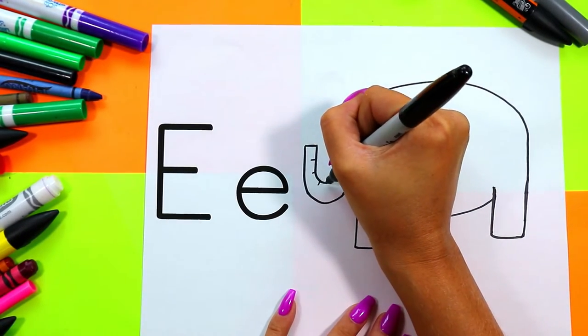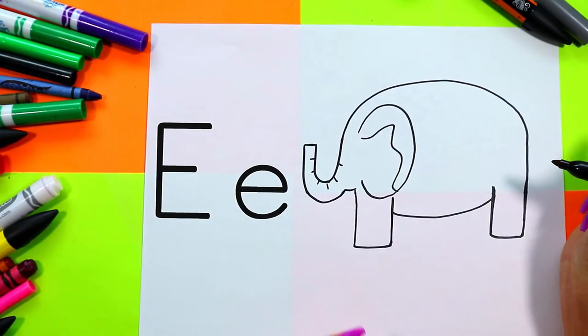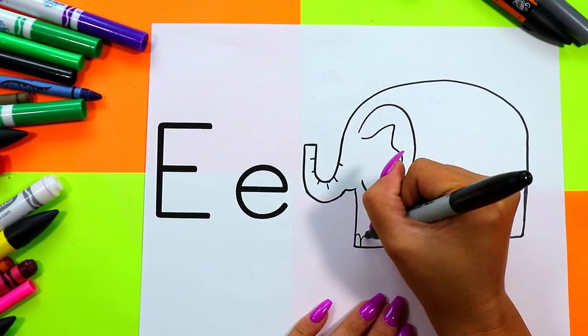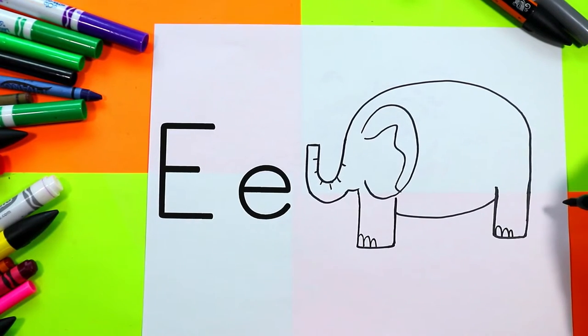Draw little lines along the top of the trunk for some wrinkles on the trunk, and draw some little toes on the bottom of elephant.